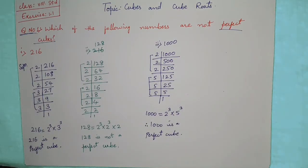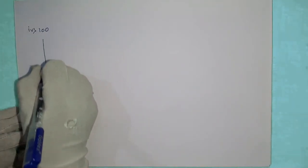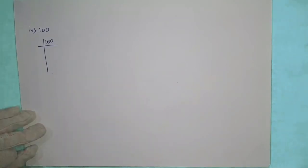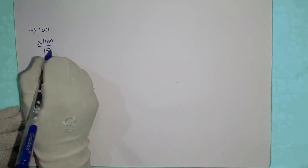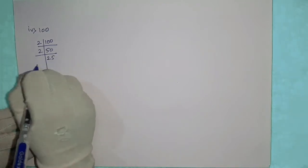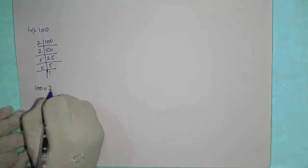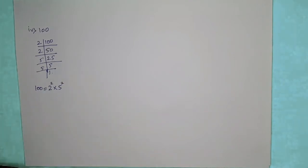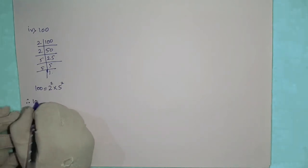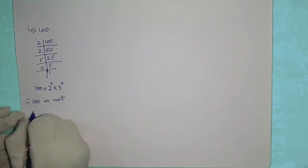The fourth number is 100. As it is even, we start with 2. After factorization, 100 equals 2 raised to 2 into 5 raised to 2. Since the powers are 2, not 3, therefore 100 is not a perfect cube.